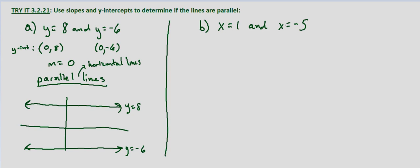Now with x equals 1 and x equals negative 5 there is no y-intercept. Let's go ahead and draw just a sketch over here. X equals 1, that's a vertical line at x equals 1. And x equals negative 5, that's a vertical line at x equals negative 5.